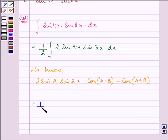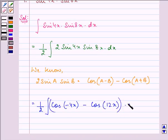we have 1/2 integral of cos(-4x) minus cos(12x) dx.